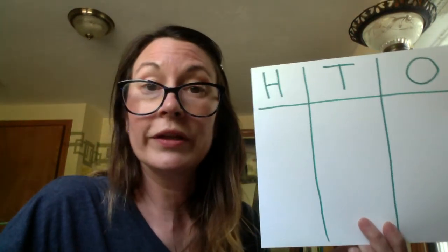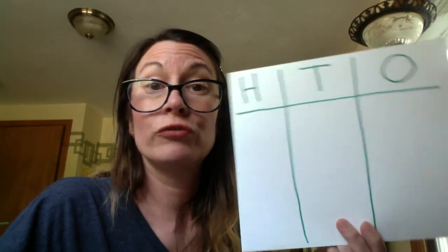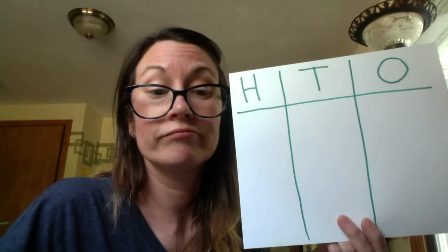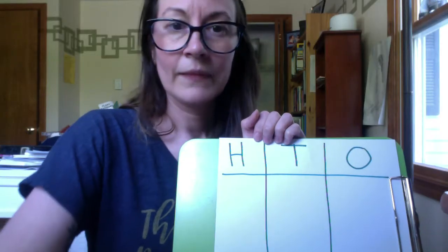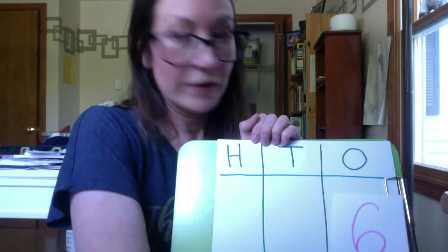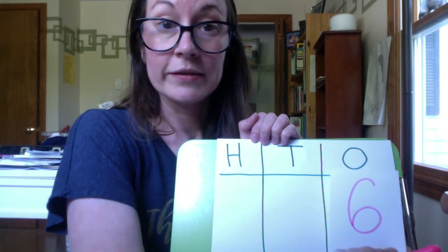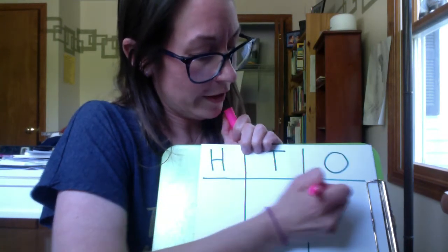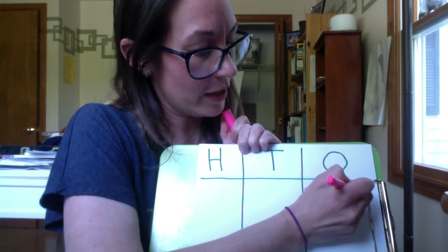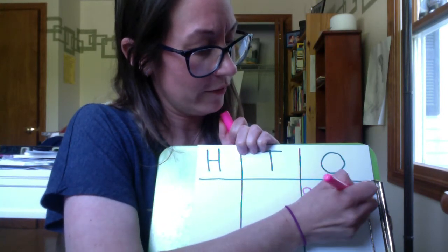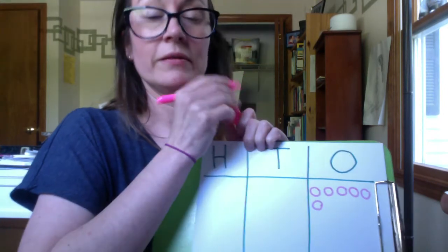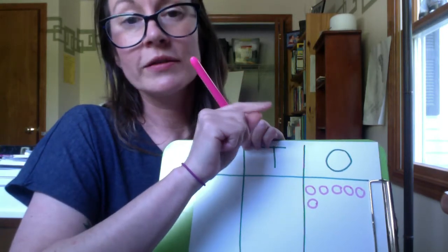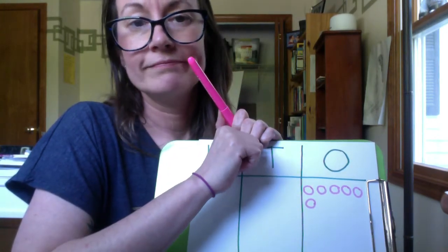Let's do a little recap of how to draw the numbers in my HTO chart. If I have six ones, I draw it like this — one, two, three, four, five, six — with circles. Some people like to do dots or little squares, but I do circles.